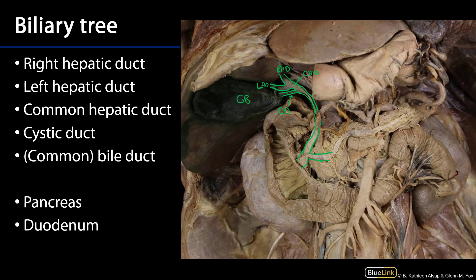So the bile and the pancreatic juice are going to enter into this second part of the duodenum through the major duodenal papilla. You can see that second part is the descending part of the duodenum.